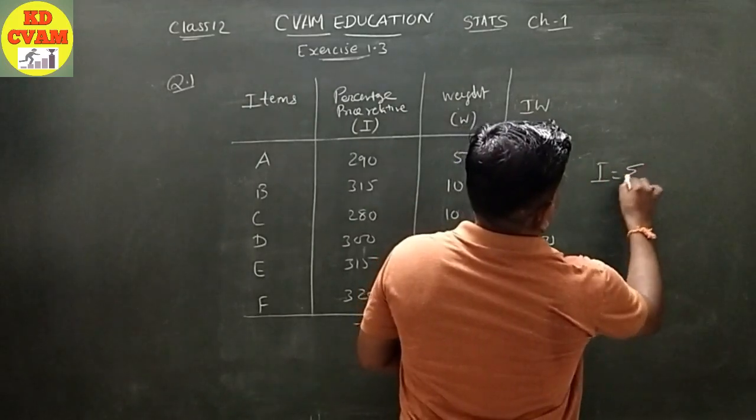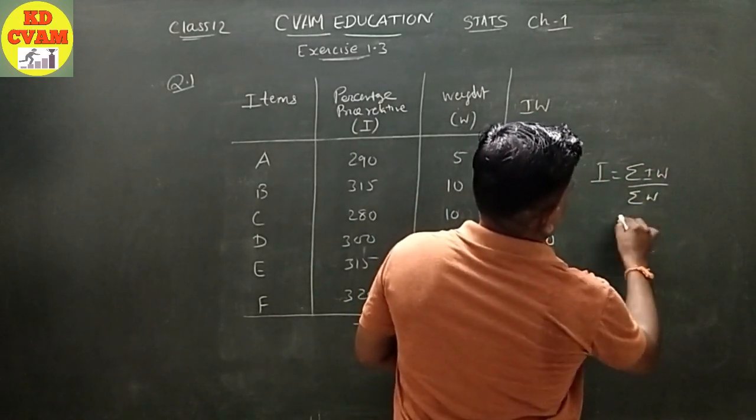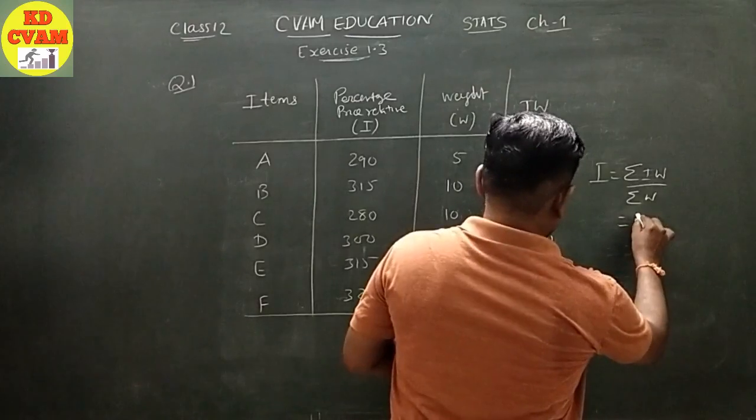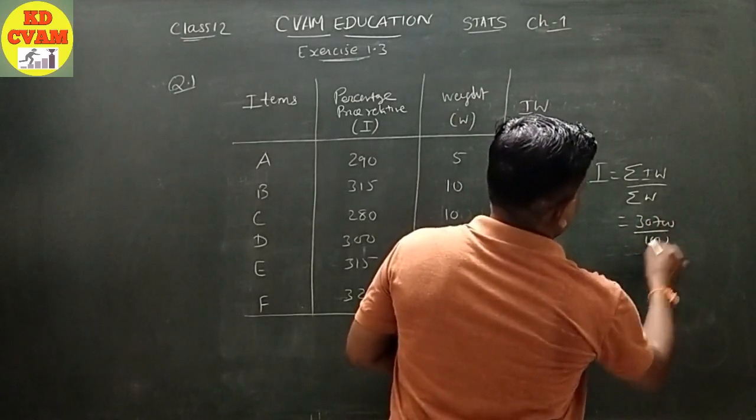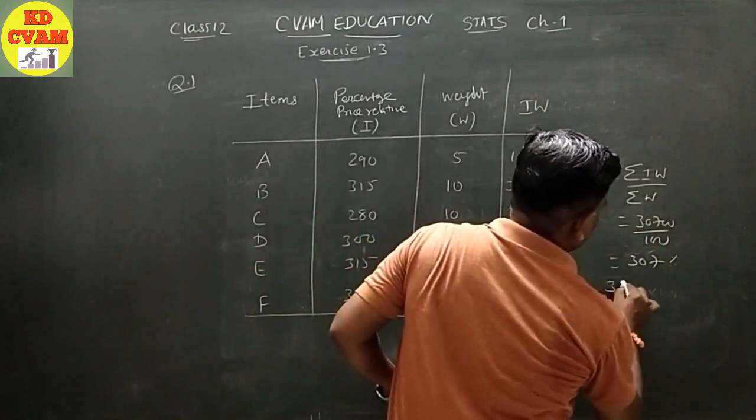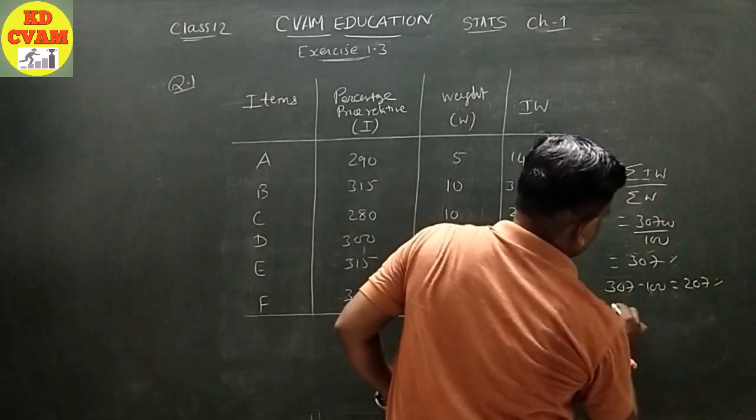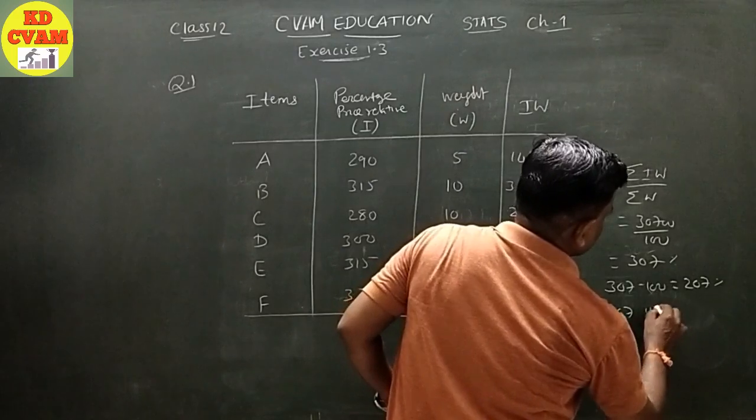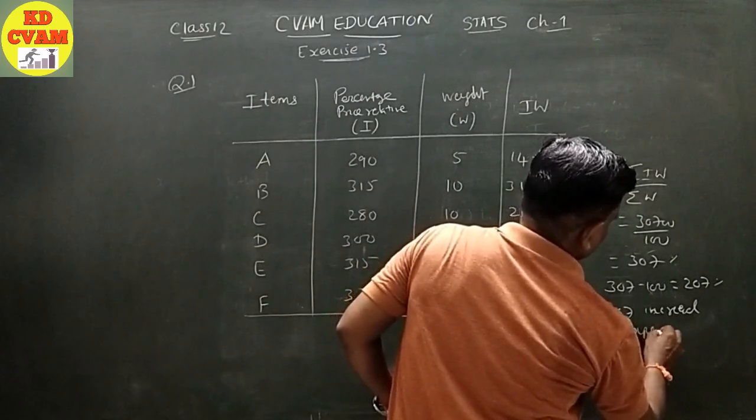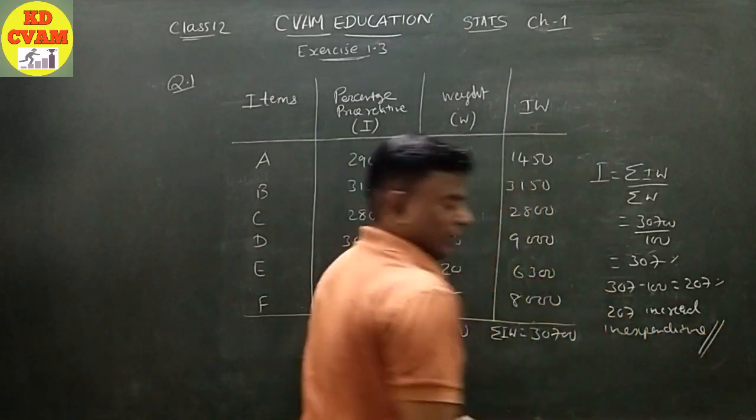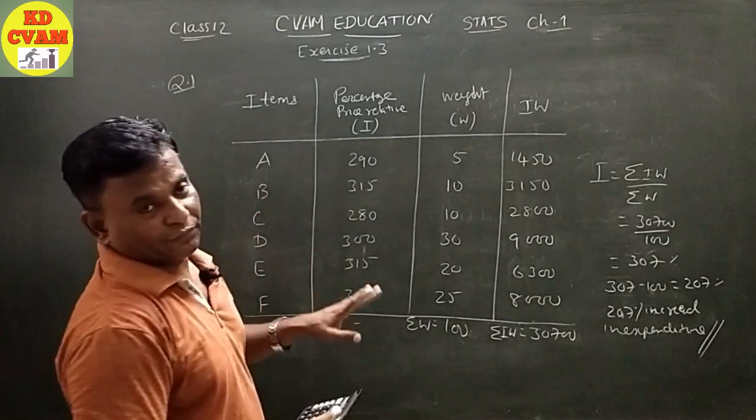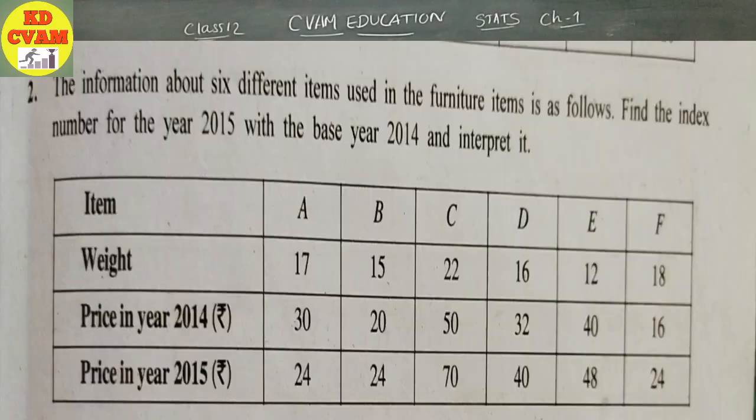Now sigma IW equals 1450 plus 3150 plus 2800 plus 9000 plus 6300 plus 8000, which equals 30,700. Therefore I equals sigma IW upon sigma W, which is 30,700 upon 100 equals 307. The interpretation: 307 minus 100 equals 207 percentage increase in expenditure.